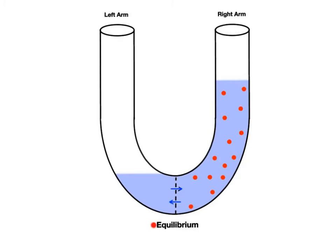Osmosis will occur until equilibrium is reached. Equilibrium is a balanced state where equal numbers of water molecules are moving from right to left due to the higher hydrostatic pressure in the right arm, as are moving from left to right due to osmosis.